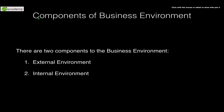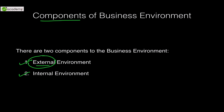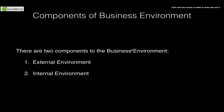From characteristics we come to components of business environment. The components are divided into two parts: external and internal. External refers to something externally impacting the business which is not in the hands of the businessmen. Internal environment refers to something that is internally impacting the business.